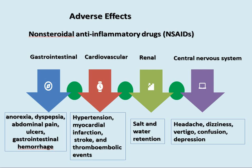NSAIDs have adverse effects across multiple systems. Gastrointestinal: anorexia, dyspepsia, abdominal pain, and gastrointestinal hemorrhage. Cardiovascular: hypertension, myocardial infarction, stroke, and thromboembolic events. Renal: salt and water retention. Central nervous system: headache, dizziness, vertigo, confusion, and depression.